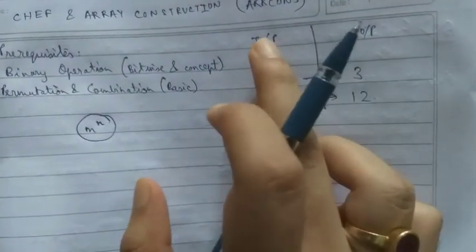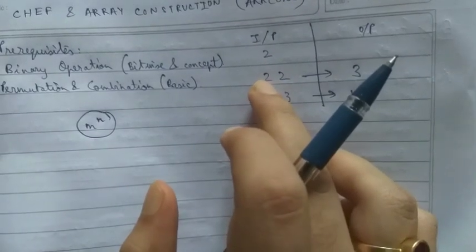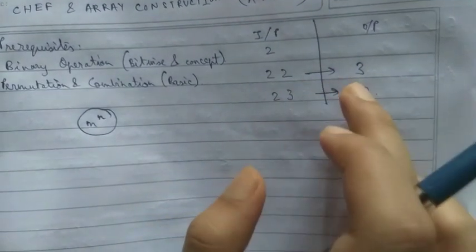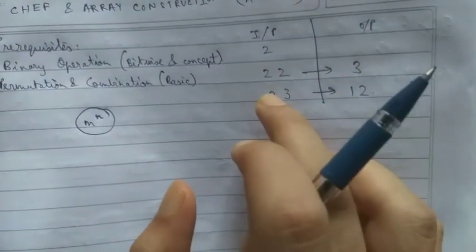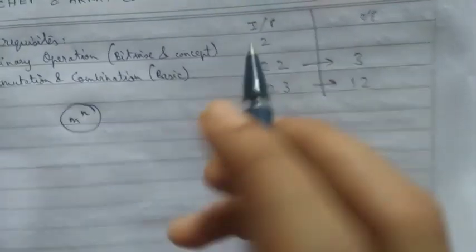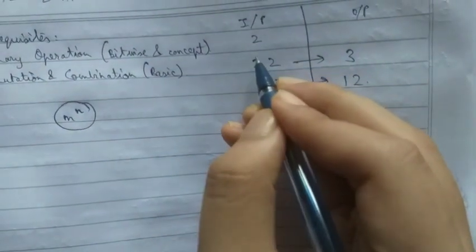The test cases: if the inputs are 2 and 2, the output will be 3. If it is 2 and 3, then it will be 12. Now let's discuss the question.